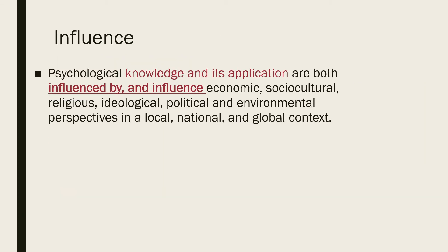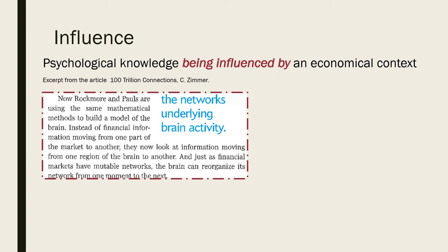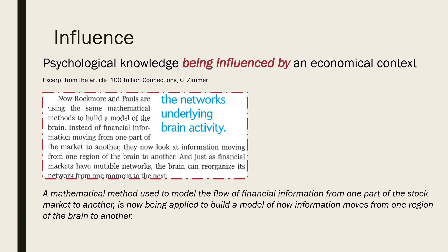The third and final key concept is influence. Psychological knowledge and its application are both influenced by and influence economic, socio-cultural, religious, ideological, political and environmental perspectives in a local, national and global context. In very simplistic terms, psychological knowledge and how it is applied is influenced by a range of contexts, and these contexts also influence how psychological knowledge is acquired and applied. Here is an example of psychological knowledge being influenced by a context — in this case an economical one. A mathematical method used to model the flow of information on the stock market has been used to build a model of the brain, which researchers then use to study how information moves from one region of the brain to another.